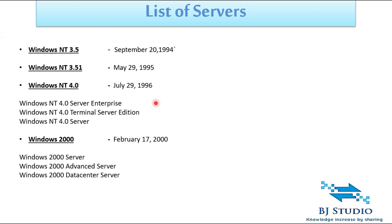The first version of Windows Server by Microsoft is Windows NT 3.5, released in September 1994. The second version is Windows NT 3.5.1, which was released in May 1995.